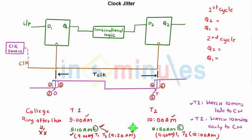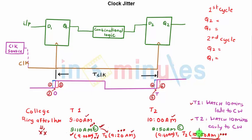Teacher one has technically started her lecture: on her own watch at 9:00 a.m., on the college watch at 9:10 a.m., and on teacher two's watch at 9:20 a.m. At some point teacher two's watch reaches 10:00 and she thinks she needs to enter the classroom, while the college watch is still showing 9:50, and teacher one's watch is showing only 9:40.